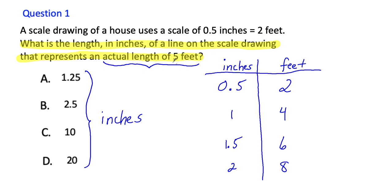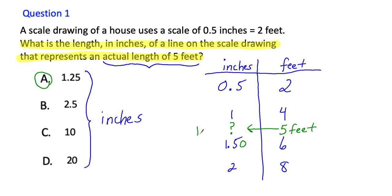I need to find 5 feet on my table. The feet are: 2 feet, 4 feet, 6 feet, 8 feet. I don't have 5 feet exactly, but I know it has to fall between 4 feet and 6 feet, so 5 feet falls right here. That tells me my scale drawing in inches has to be somewhere between 1 inch and 1.50 inches. Which answer falls between 1 inch and 1.50 inches? That is A — 1.25 — because 1.25 falls between 1 and 1.50. The rest are too big. So that's how you do this using a table.